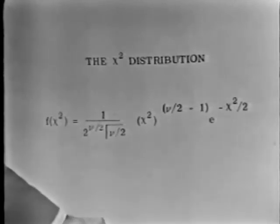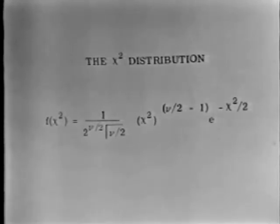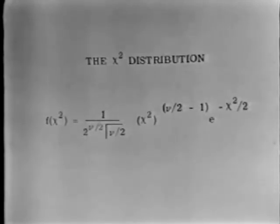This distribution was studied and explored in the context of contingency tables and quantitative data by a very famous statistician by the name of Carl Pearson. Carl Pearson is one of the giants of statistics. He started out his career, believe it or not, as a lawyer and then became fascinated by the problems of science and making inferences from data.